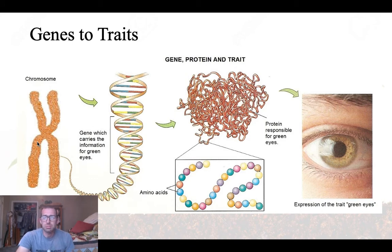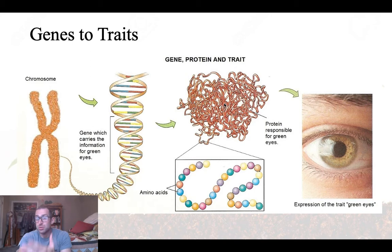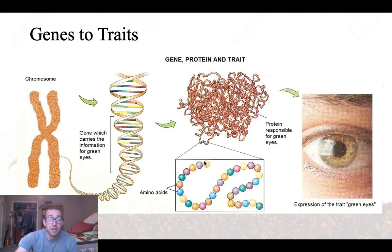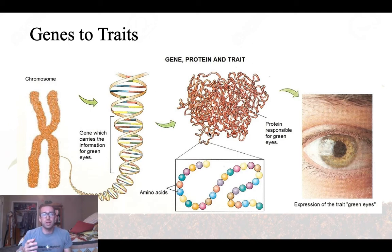In gene expression or protein synthesis, we go from a segment of DNA to the creation of an amino acid chain, which is a protein, and ultimately get to a trait. A section of DNA gets transcribed into messenger RNA that travels to a ribosome. Transfer RNA binds to it, carrying amino acids that get assembled as the messenger RNA works through the ribosome, producing a chain of amino acids — a protein — that interacts with other proteins to eventually create a trait.